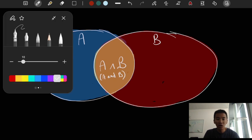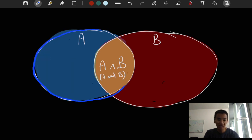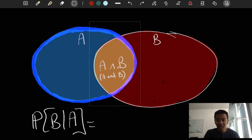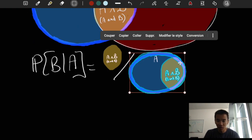Now when we condition on A being true, it means that we restrict ourselves only to the set A. The probability of B given A is then the proportion of this set that still corresponds to B, relatively to the whole size of A. So here it'd be the orange part divided by the blue part.